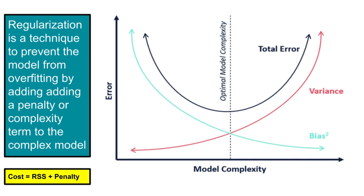Let's understand this using a figure. The x-axis represents the model complexity and the y-axis represents the error. On the left side, the bias in the model is high — that means the model does not perform well on the training data, so it is called underfitting. On the right side, the variance is high, which means the model does not perform well on the test data — that is called overfitting.